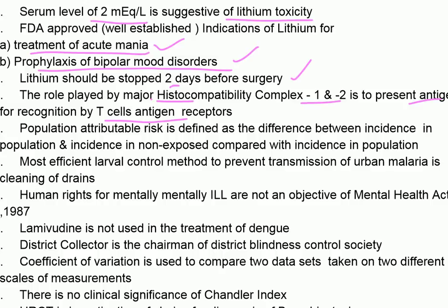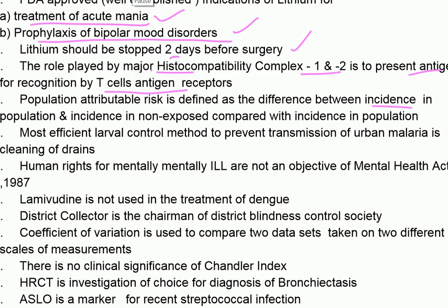Population attributable risk is defined as the difference between incidence in the total population and incidence in the non-exposed group, divided by the incidence in the total population. In a 2×2 contingency table, the formula is: (a/a+b) − (c/c+d).